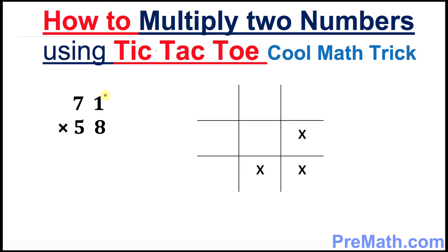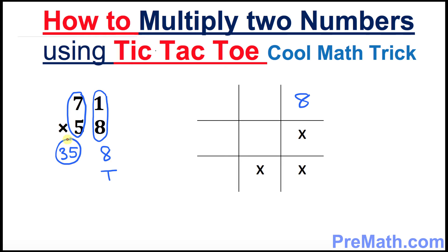Let's multiply the right-hand side digits: 1 times 8 is 8, so this 8 is going to go on the top row of this tic-tac-toe, right up here. Now we're going to multiply 7 times 5, which is 35. This 35 is going to go at the very bottom row — since there is only one cell available, we have no choice but to put all these digits in just one cell.